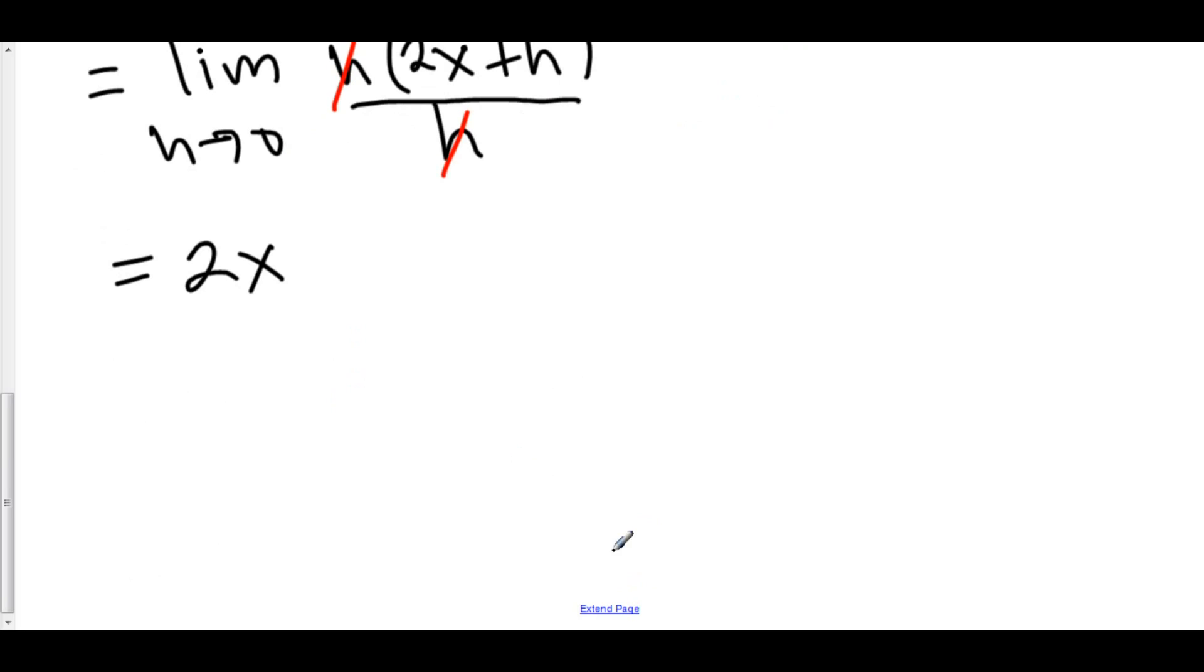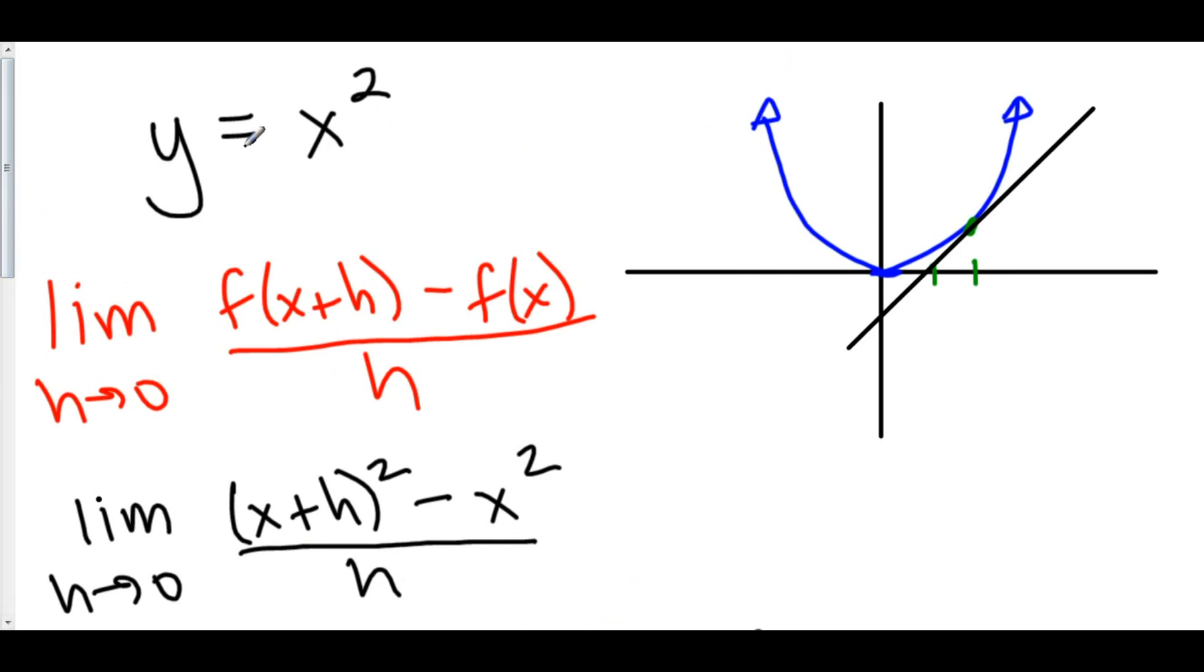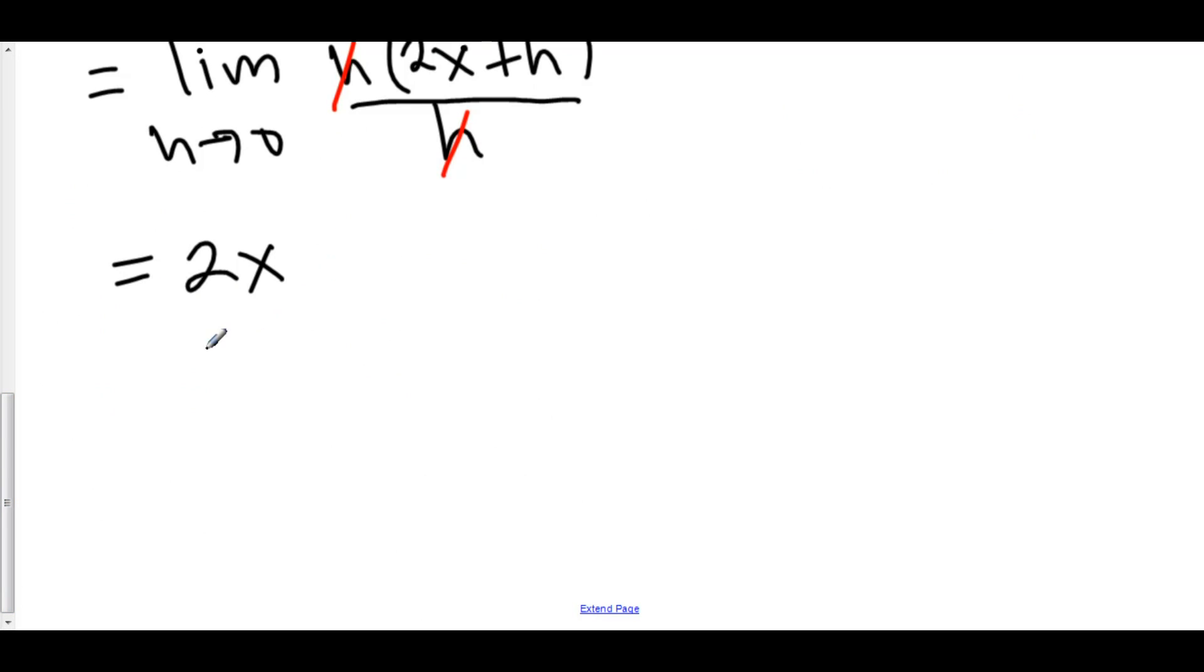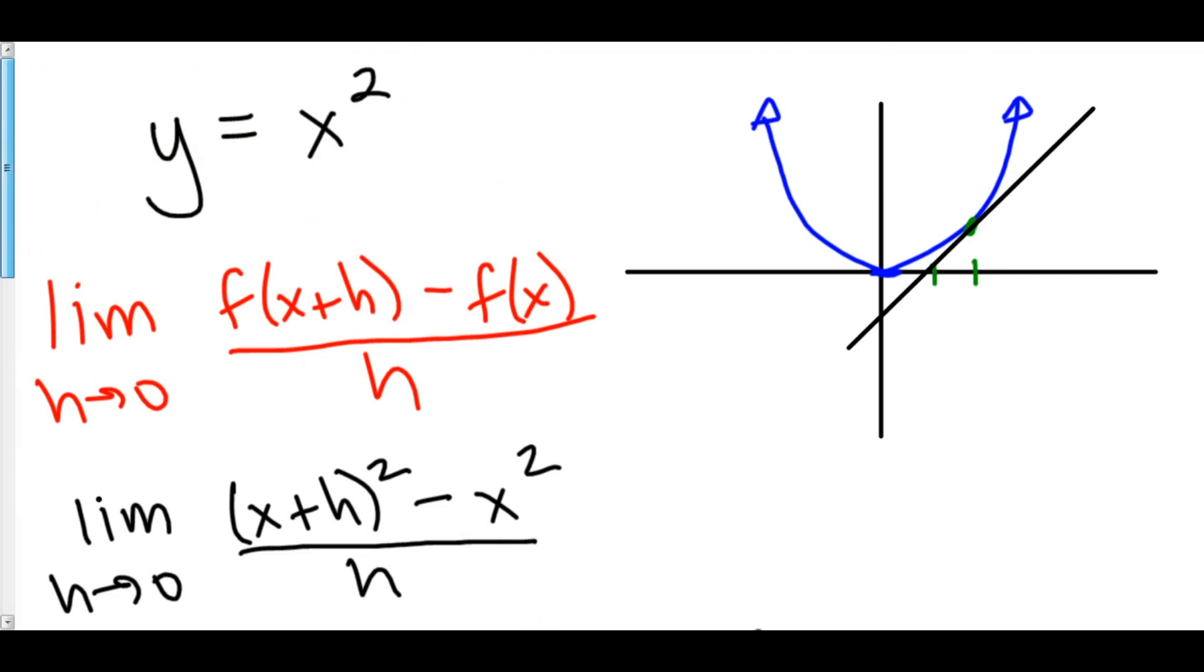We have some notation here. We have just found that the derivative of y equals x squared is equal to 2x. Now, we found the derivative of our function y with respect to x. x is my variable in all the stuff. All the stuff's happening to x. And y is my output here.